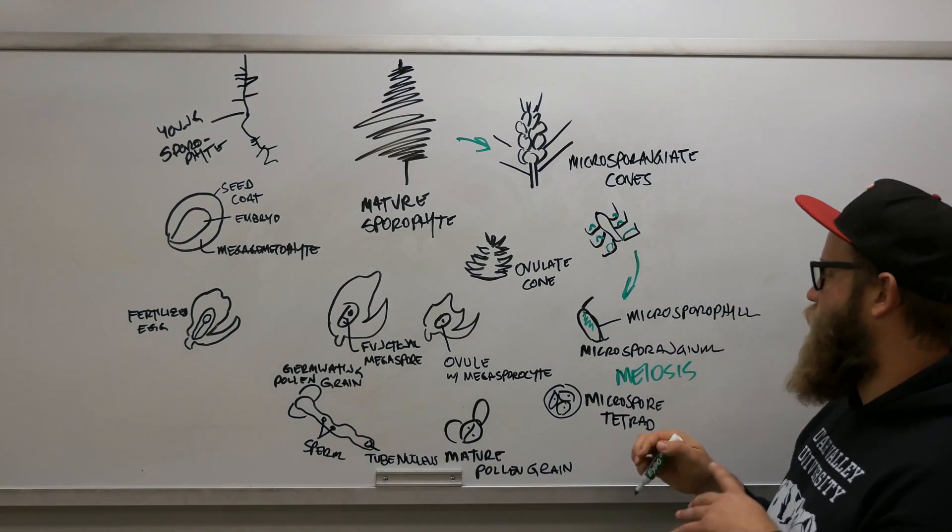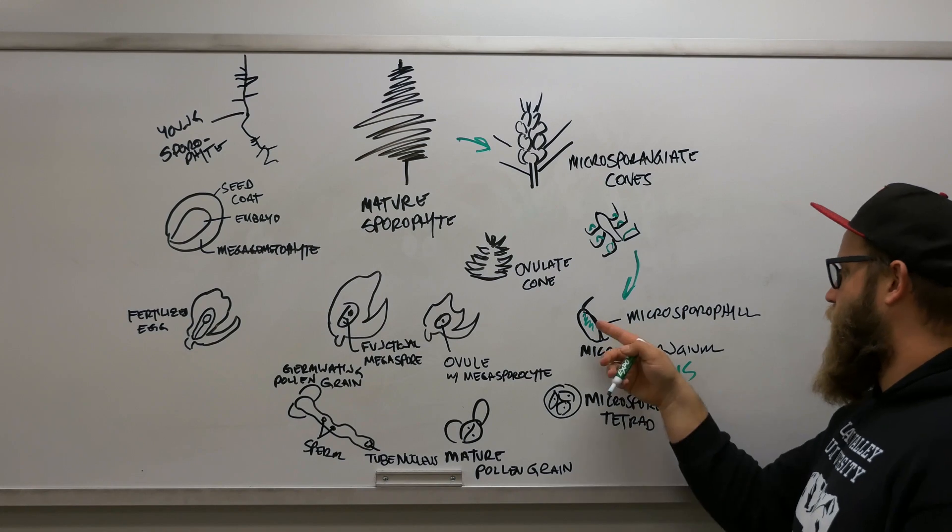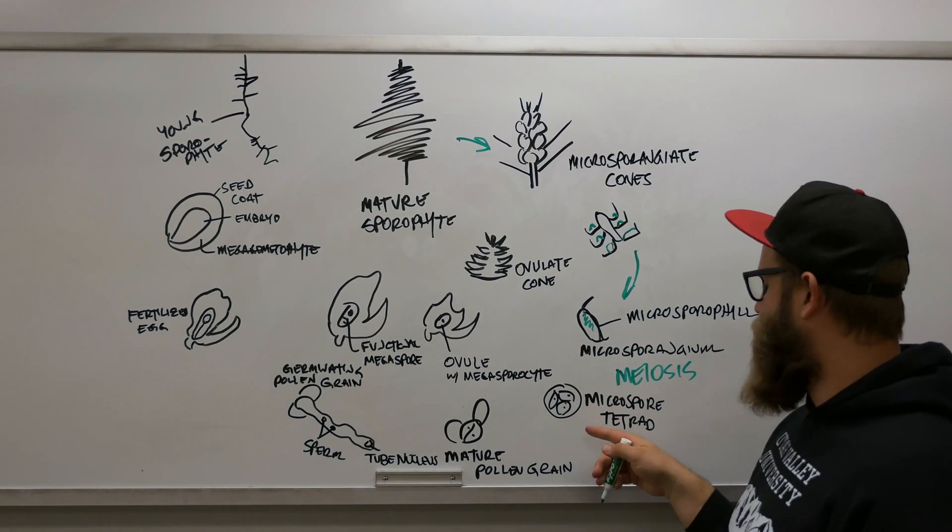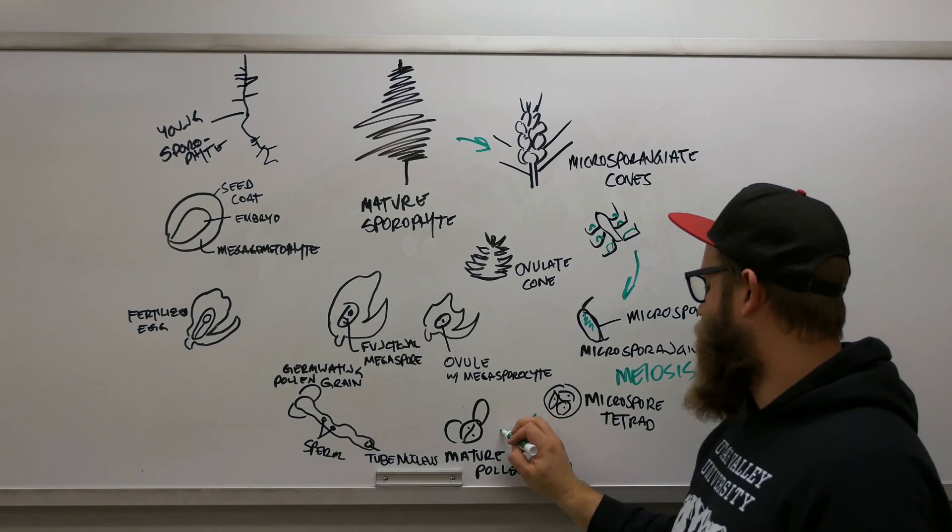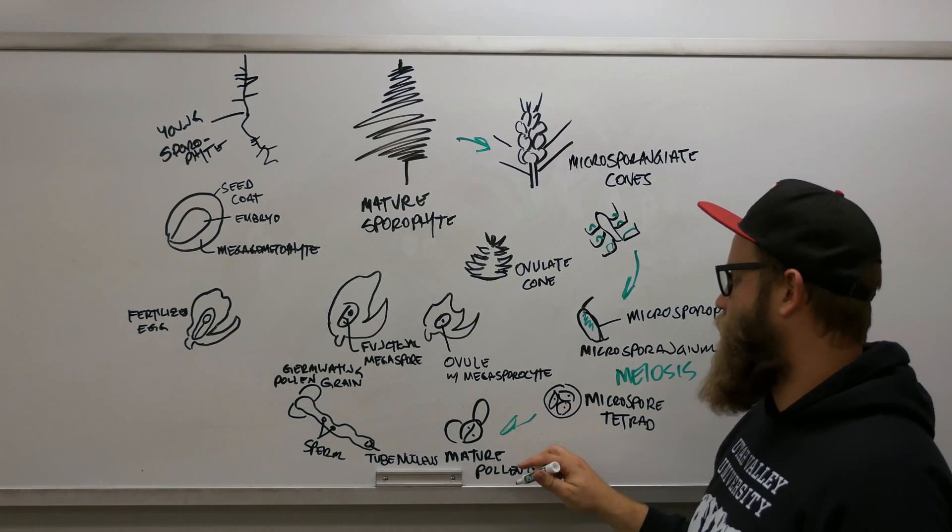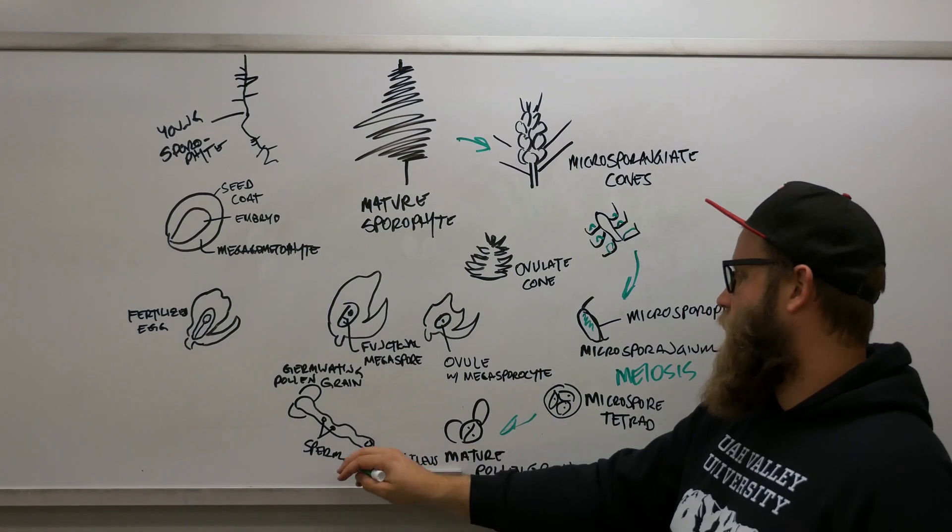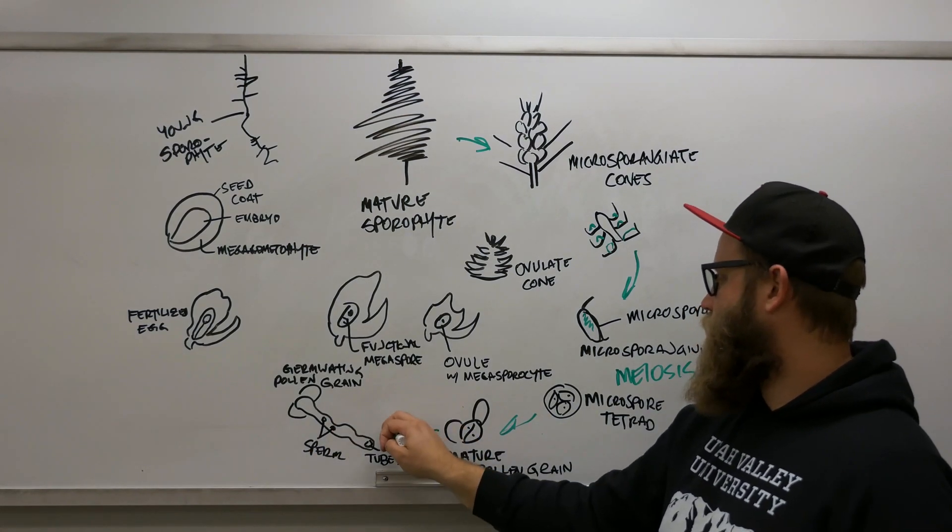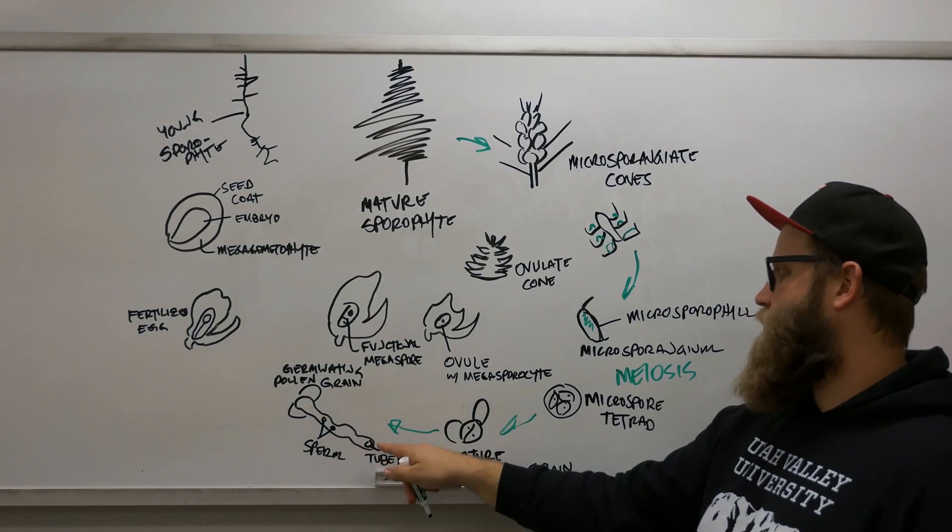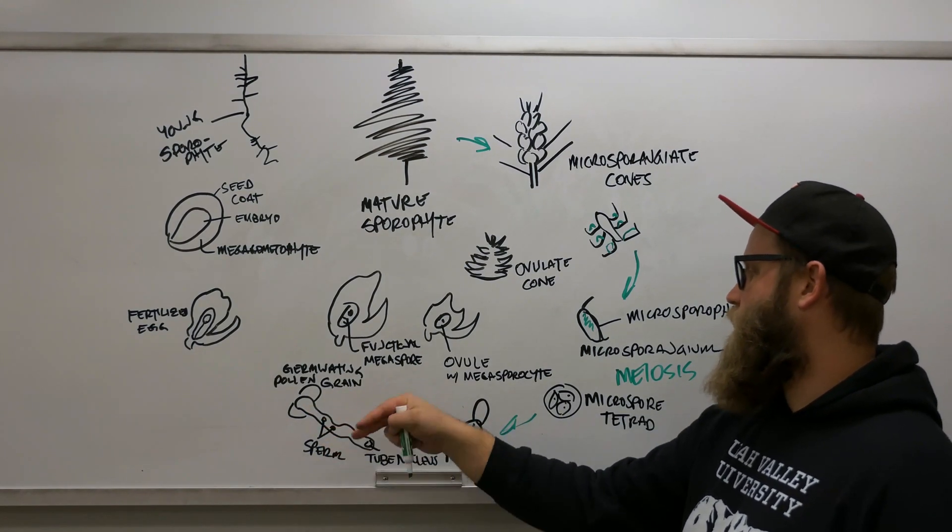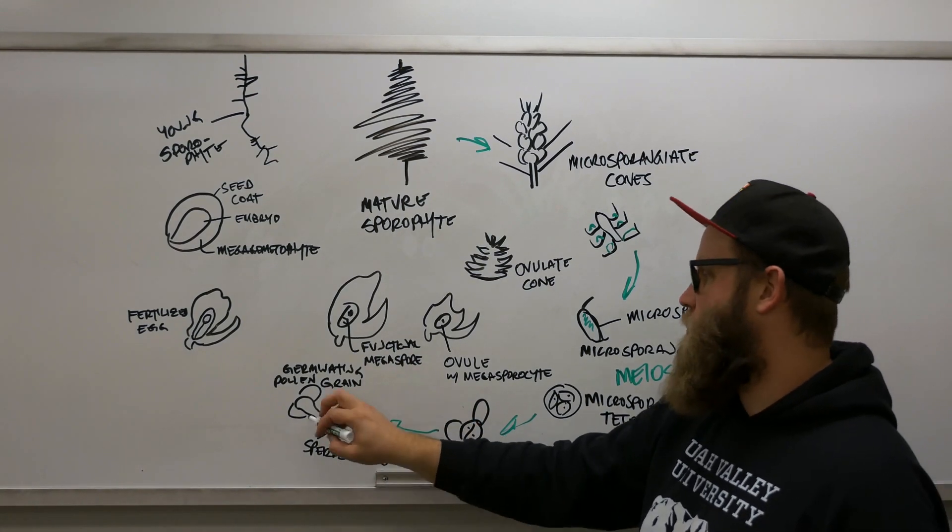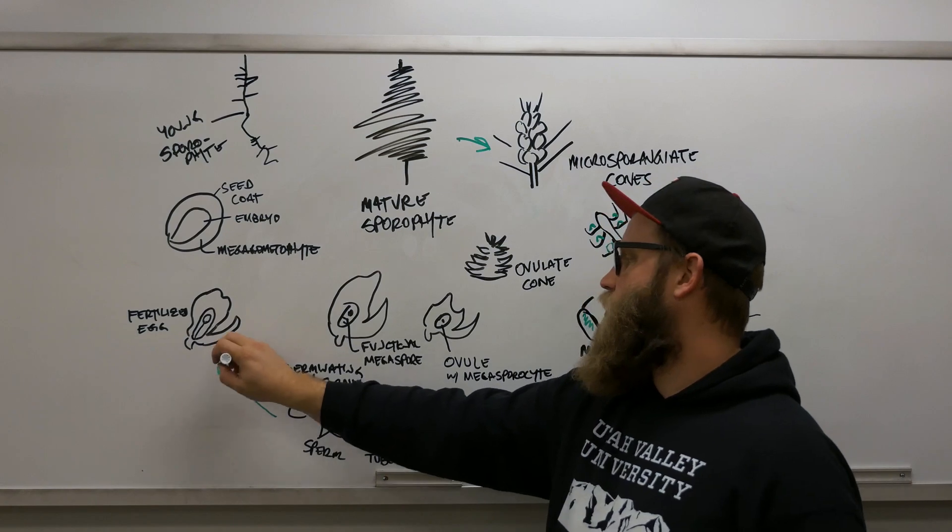Right at this stage, previous to these microspore tetrads forming, those are going to turn into a mature pollen grain, this little mickey mouse guy here. Eventually, this tube cell elongates as the nucleus for that, and there's sperm that form as this. Then the pollen grain germinates, which meets us here.